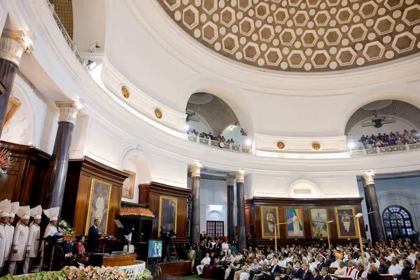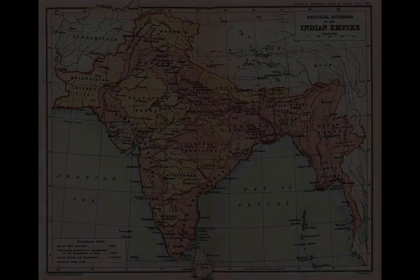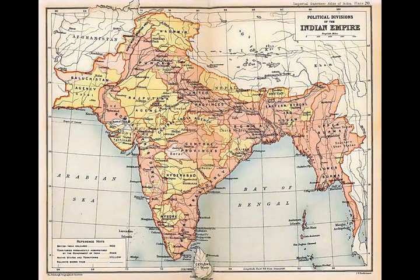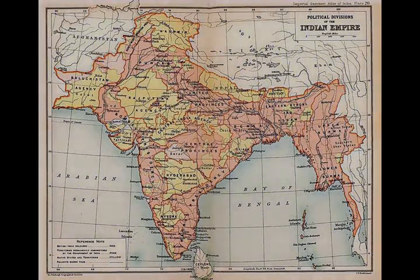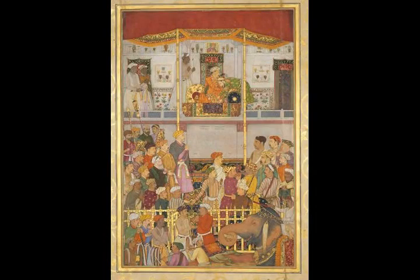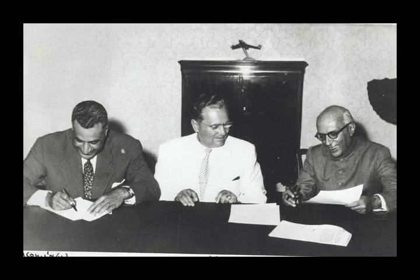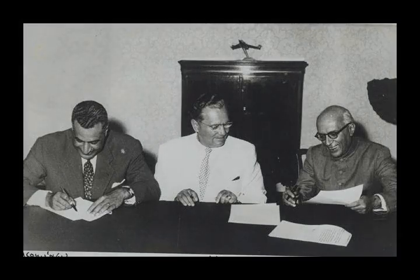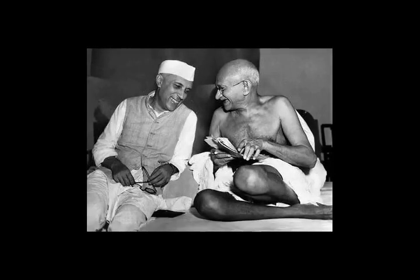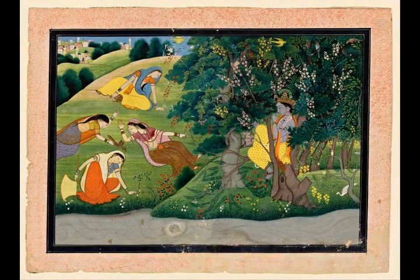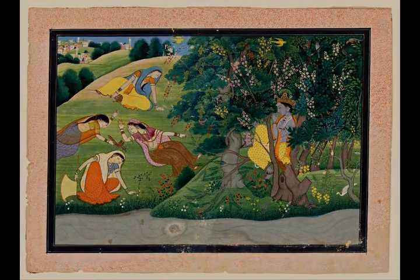The Mughal state's economic policies, deriving most revenues from agriculture and mandating that taxes be paid in well-regulated silver currency, caused peasants and artisans to enter larger markets. The relative peace maintained by the empire during much of the 17th century was a factor in India's economic expansion, resulting in greater patronage of painting, literary forms, textiles, and architecture. Newly coherent social groups in northern and western India, such as the Marathas, the Rajputs, and the Sikhs, gained military and governing ambitions during Mughal rule. Expanding commerce gave rise to new Indian commercial and political elites along the coasts of southern and eastern India.